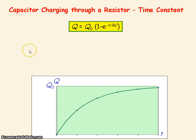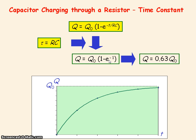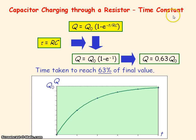The time constant is equal to the product of the resistance and capacitance of the circuit. When the time is equal to the time constant, this part of the expression becomes e to the minus 1, which is equal to 0.37, and so the charge stored on the capacitor will equal 63% of the final value. The time constant for a capacitor that is charging is the time taken for the charge to reach 63% of its final value.